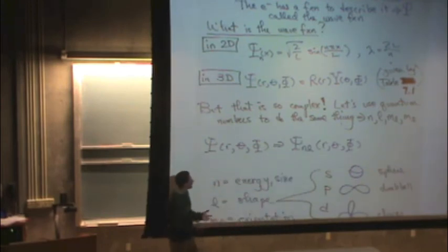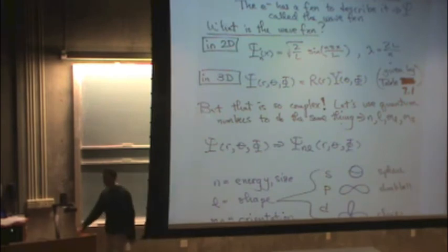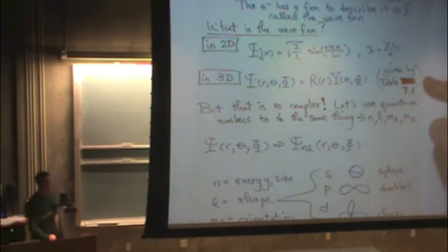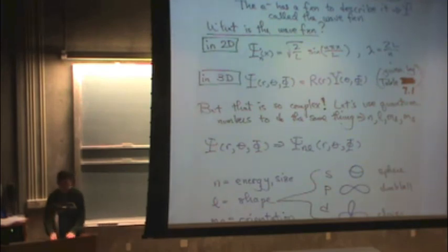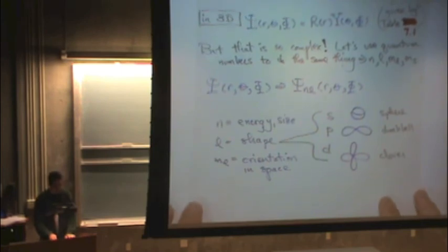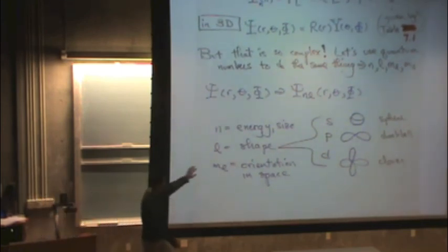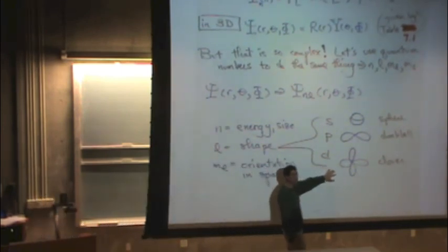And so instead of, and you probably remember last time, there's this big table that's in your text and it's in the reader that's a little messy and has a lot of functions. It's hard to plot those. And so instead of attempting to mess with those functions, if we know the quantum numbers n, l, m sub l, specifically l tells us the shape immediately.